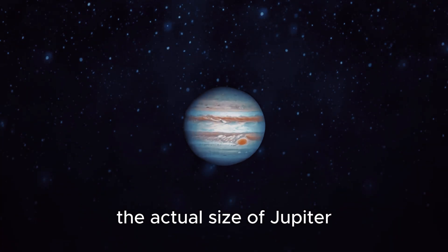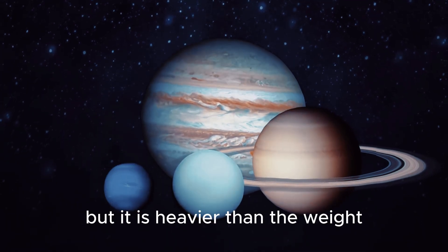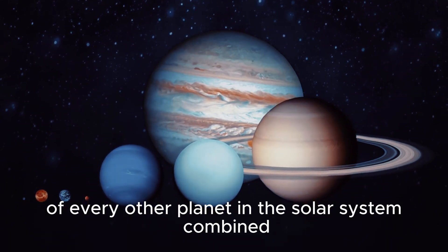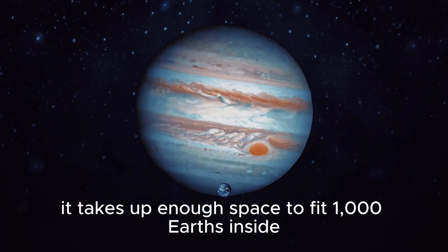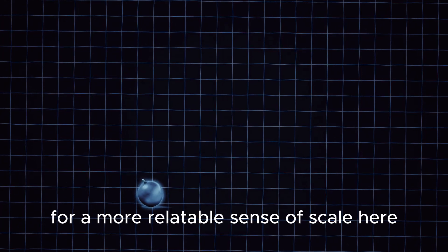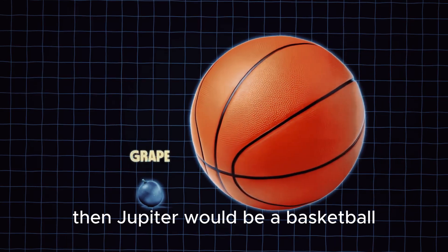The actual size of Jupiter is very difficult to comprehend. Not only is it really big, but it is heavier than the weight of every other planet in the solar system combined. It takes up enough space to fit 1,000 Earths inside. For a more relatable sense of scale here, if the planet Earth was the size of a grape, then Jupiter would be a basketball.